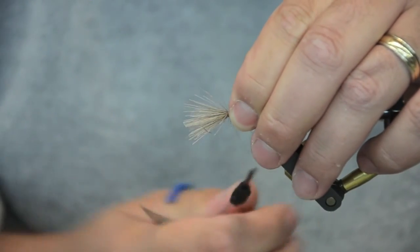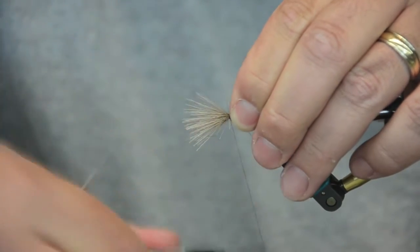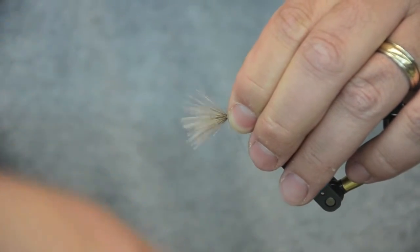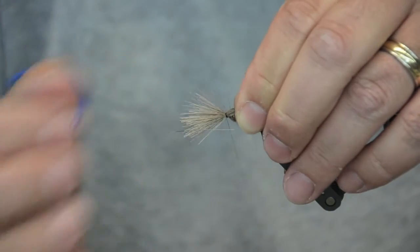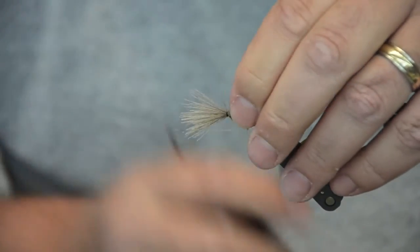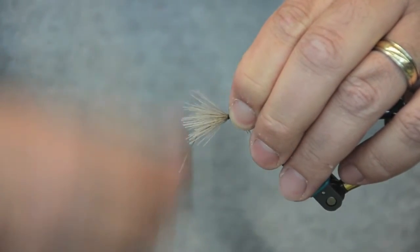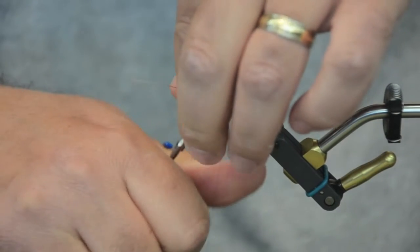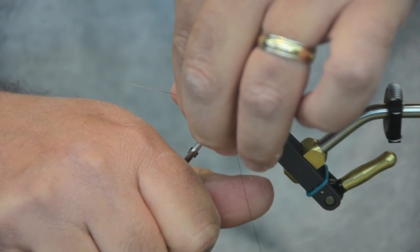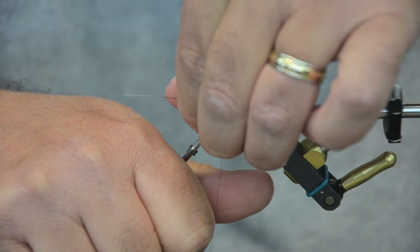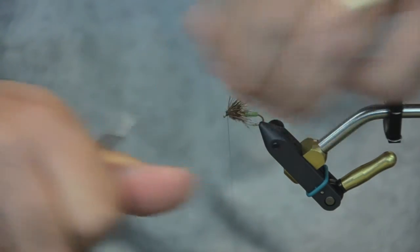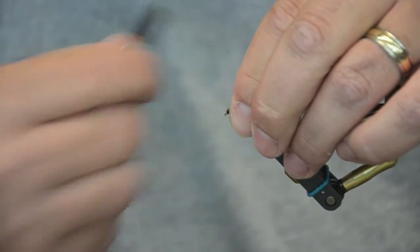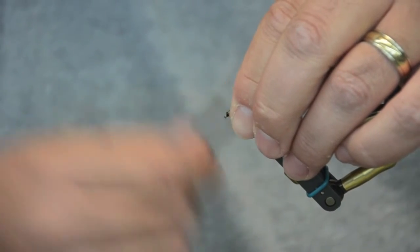And I'll make a few wraps here, pull straight down. I'm using a pretty light thread here. And I'll kind of keep that in position. Make a few more wraps to get it snug down. And then I'm going to just take all this and trim it off. And I'll just clean this head up a little bit with thread.